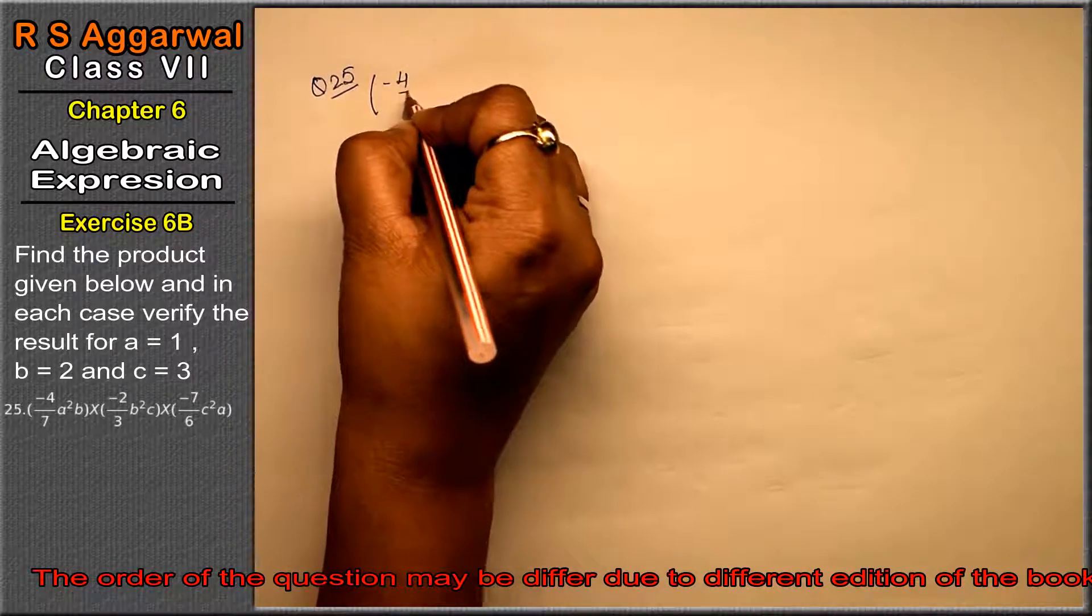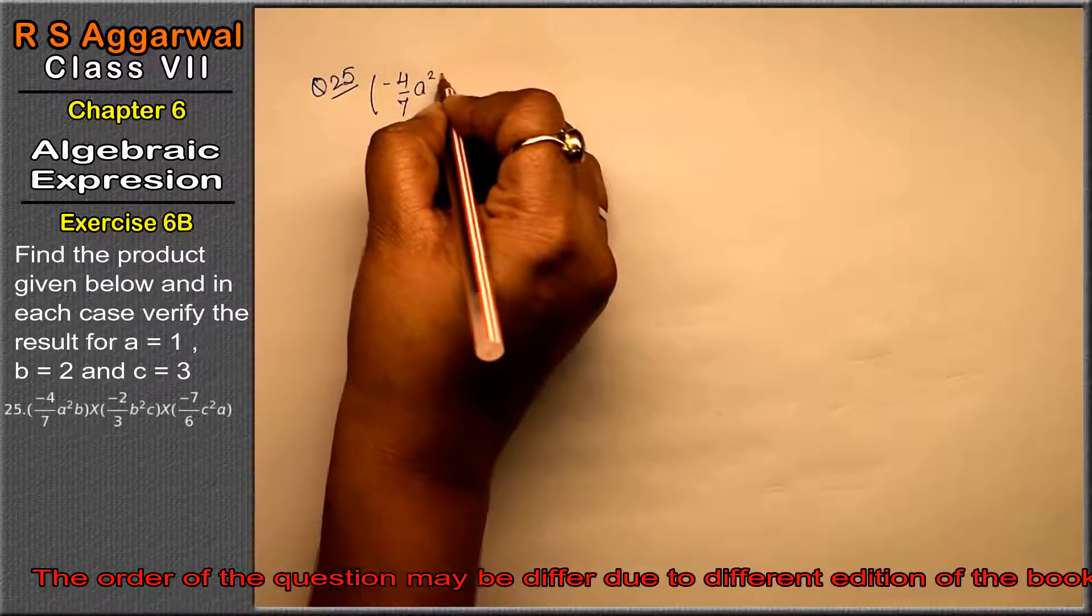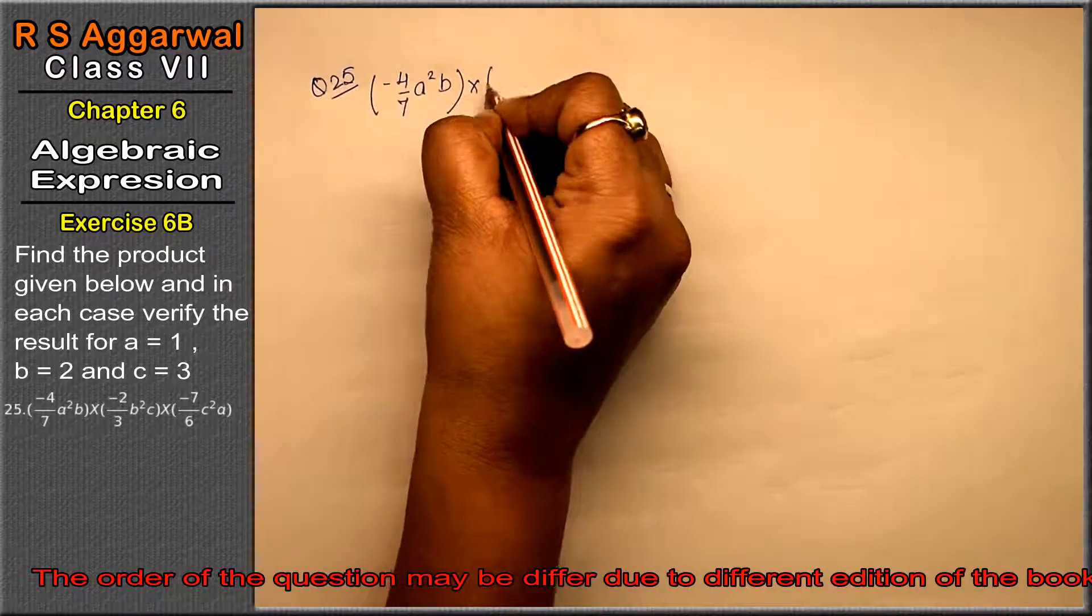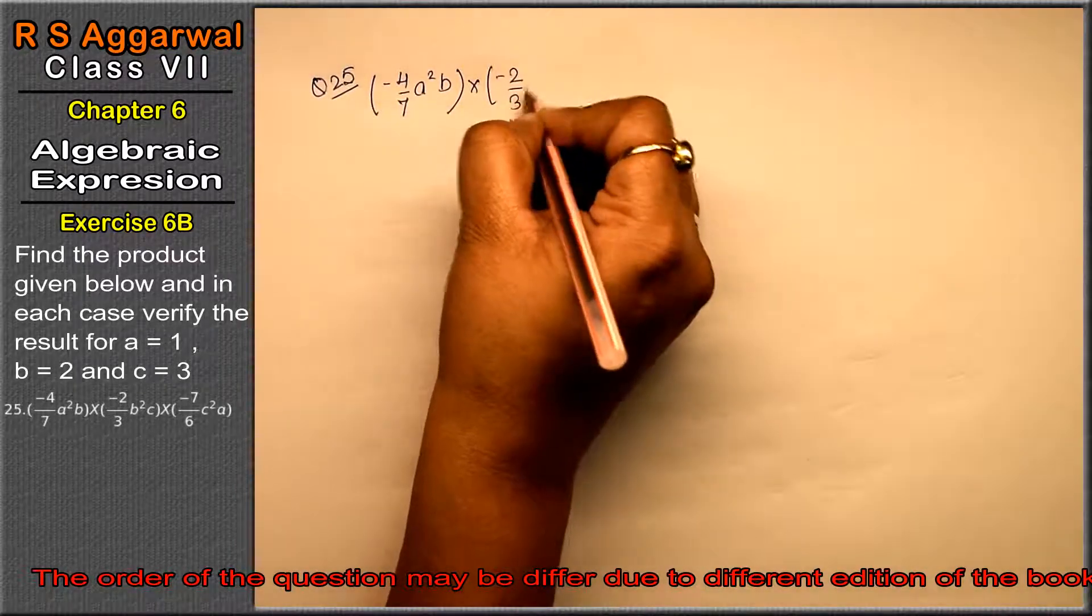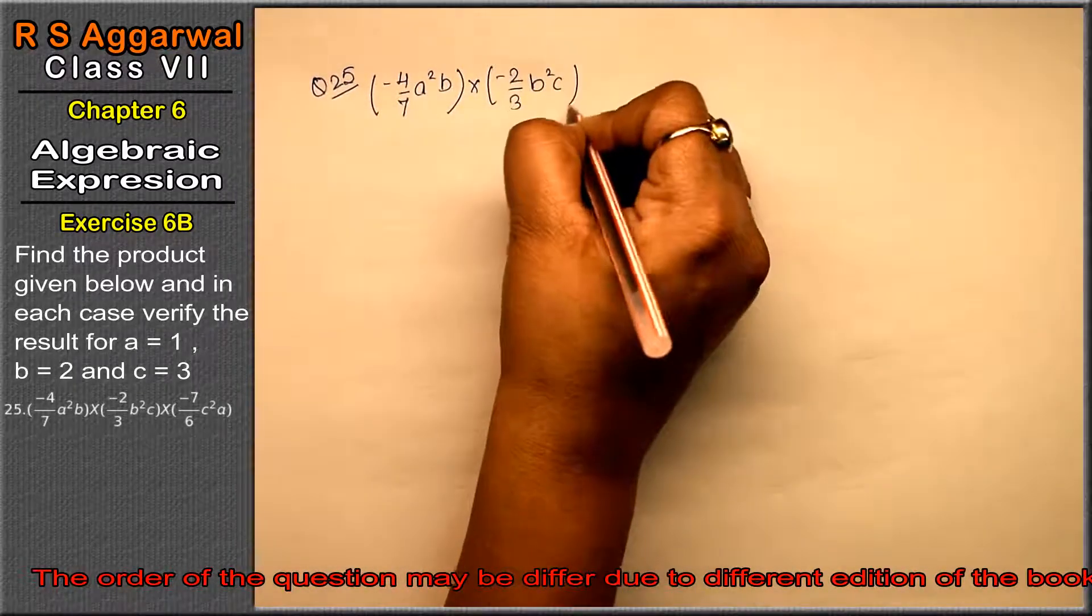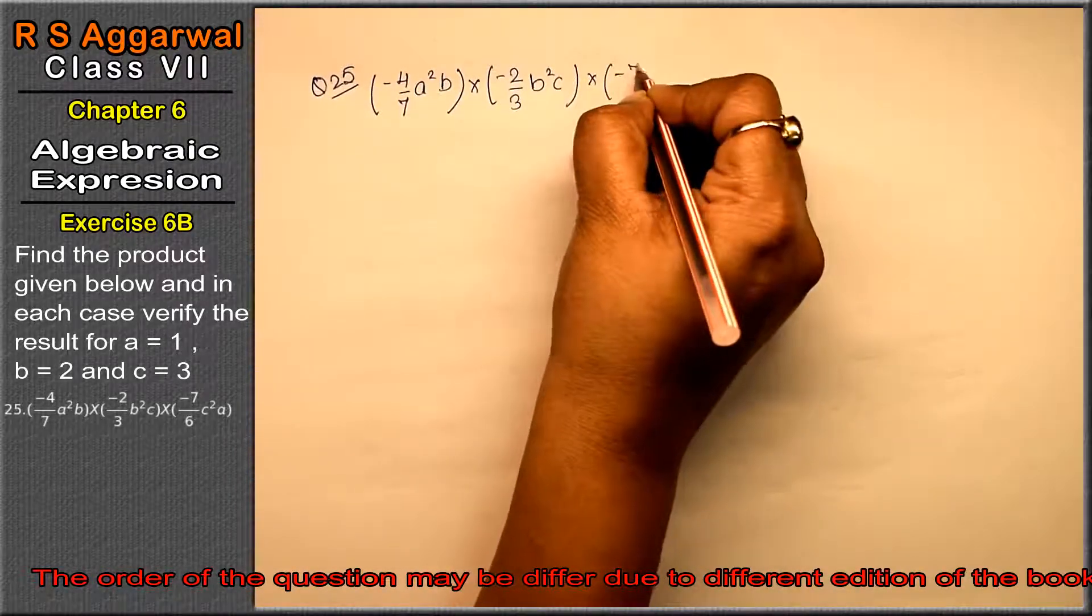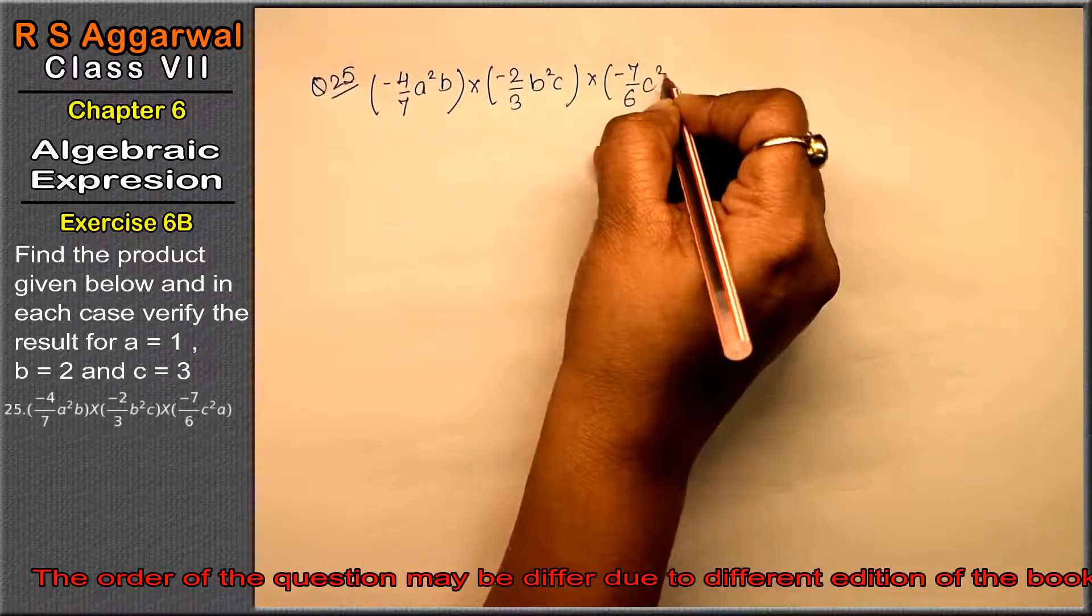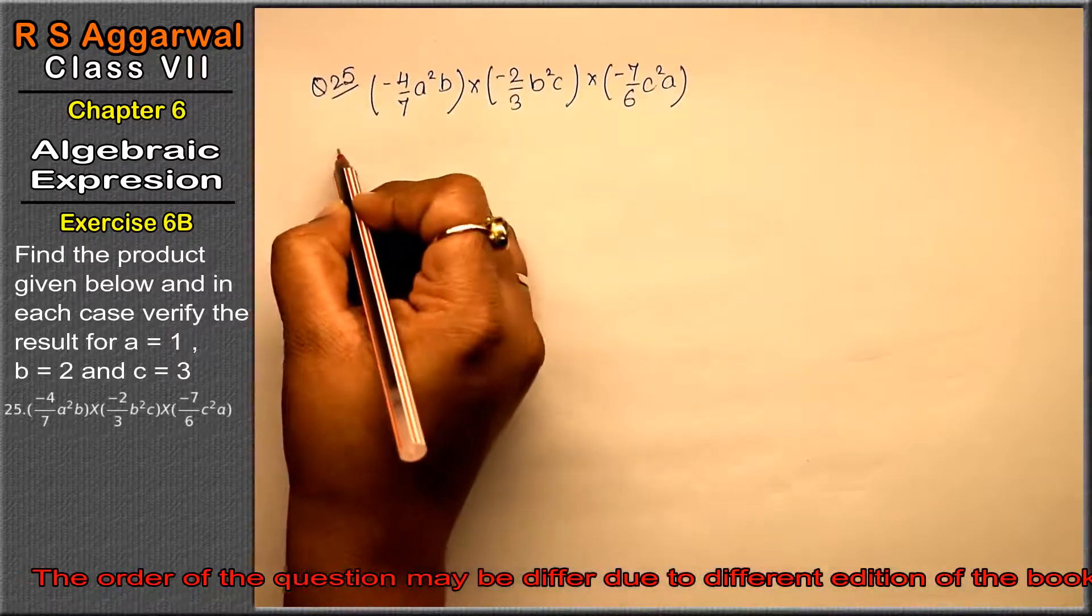So, the product which is: minus 4 upon 7 a squared b into minus 2 upon 3 b squared c into minus 7 upon 6 c squared a.